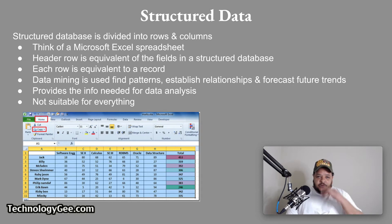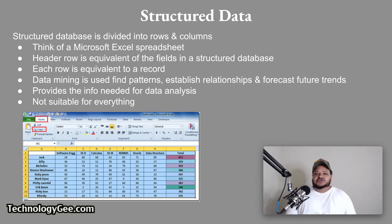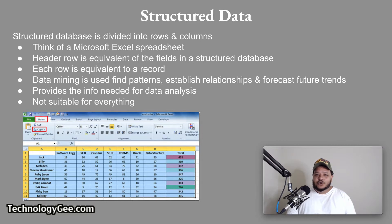There are three different types of data structures. You have structured, semi-structured, and non-structured. A structured database is divided into rows and columns. Think of data in a Microsoft Excel spreadsheet. The header row is the equivalent of the fields in a structured database, and each row is equivalent to a record. Data mining is used on structured databases to find patterns, establish relationships, and forecast future trends.